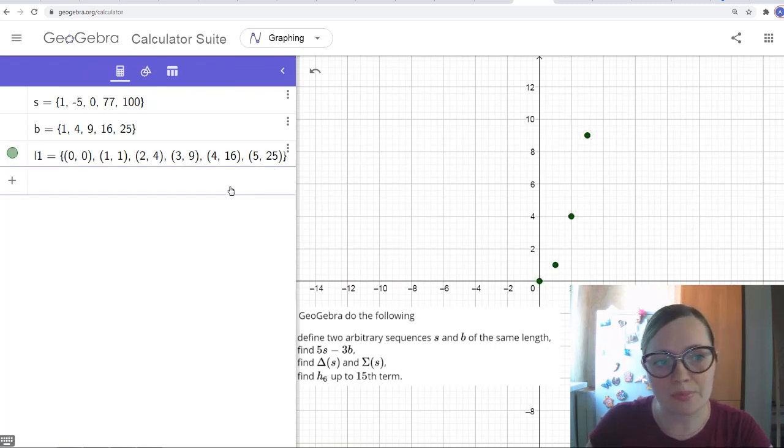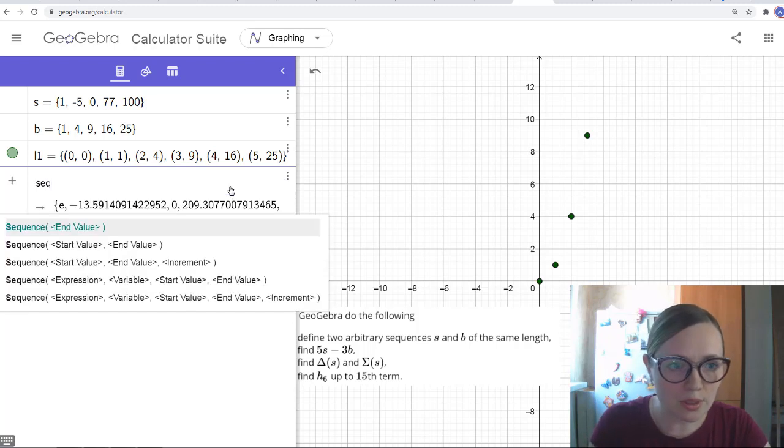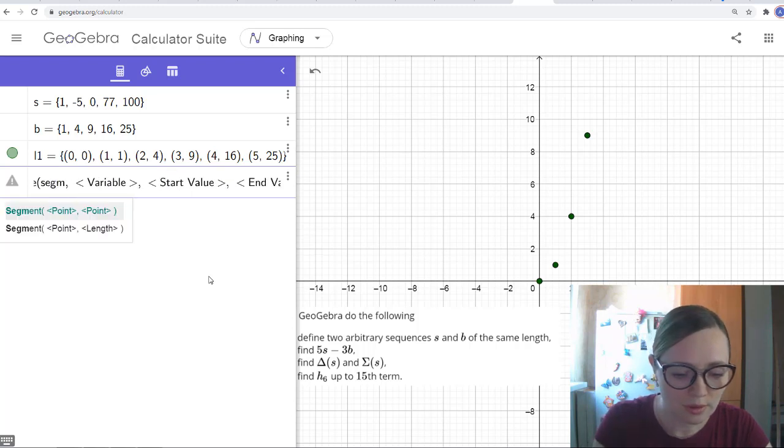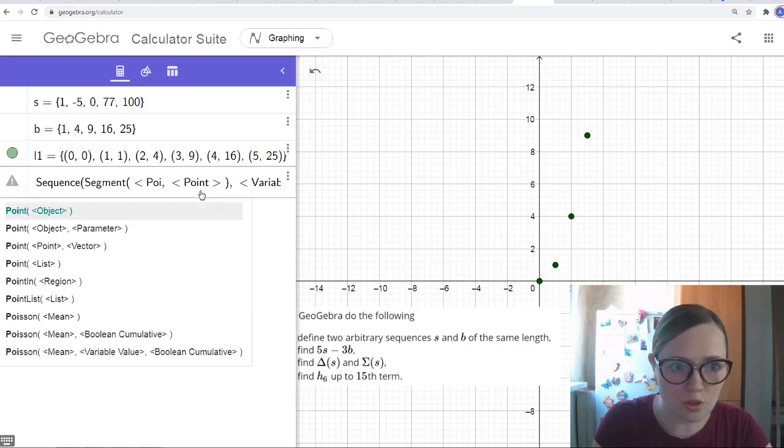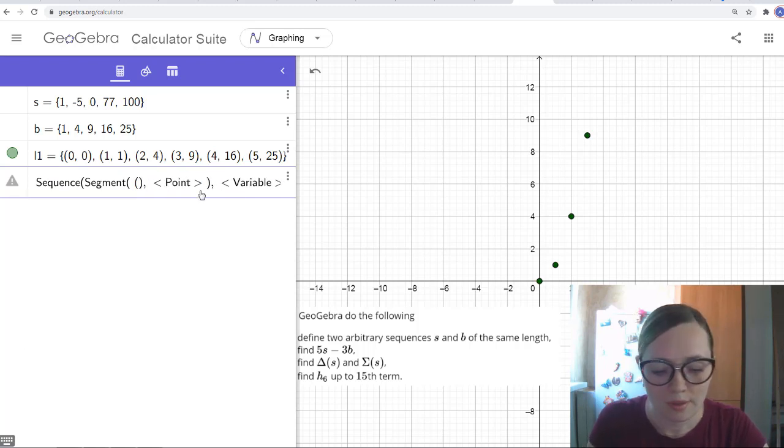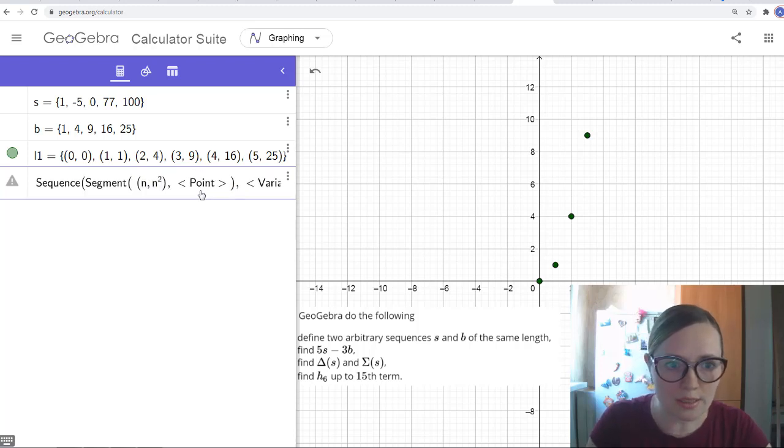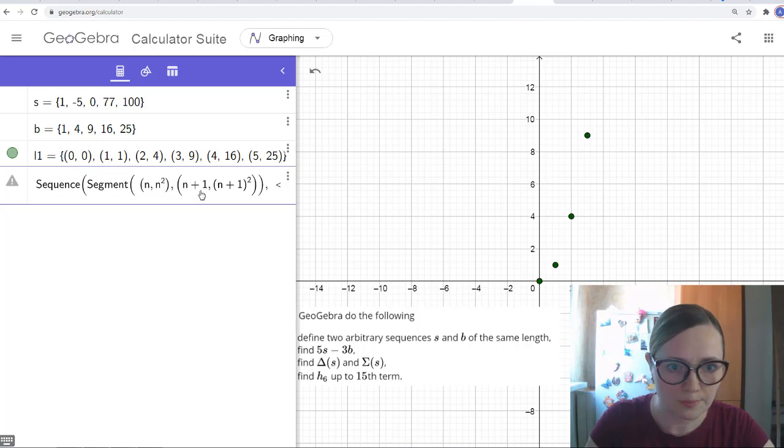And also it can be not points, maybe it can be segments for example. The sequence of segments, let's say the first point is maybe (n, n squared) and the second point, let's say, (n+1, (n+1) squared). And the variable is also n, and again, let's say we start from 0 to 5.